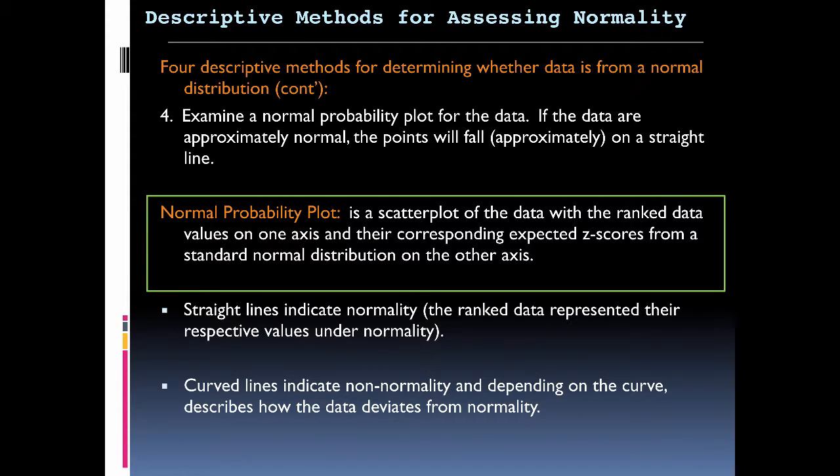Then the last one, number four, we want to examine the normal probability plot for data. So what is that? Well, it's a scatter plot of ranked data—the values exist on one axis...